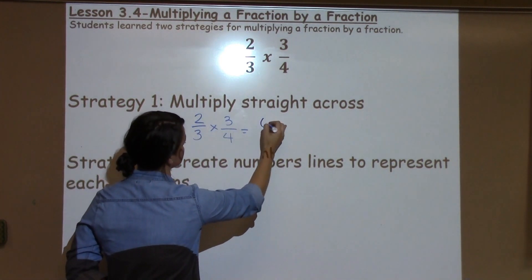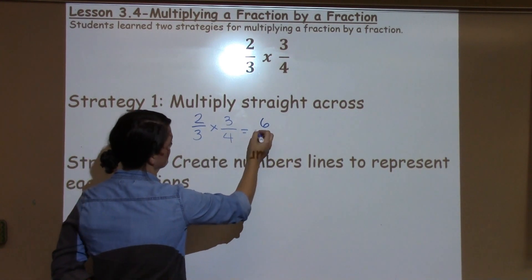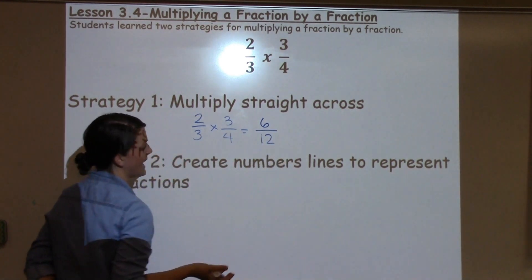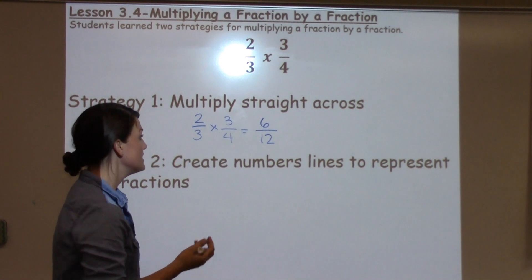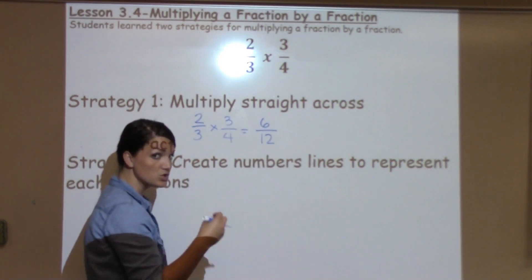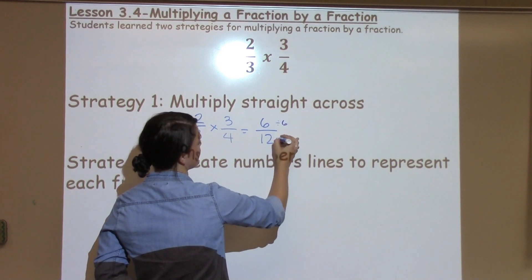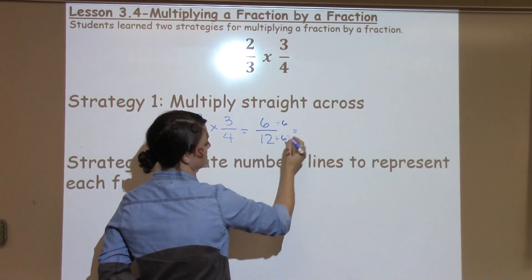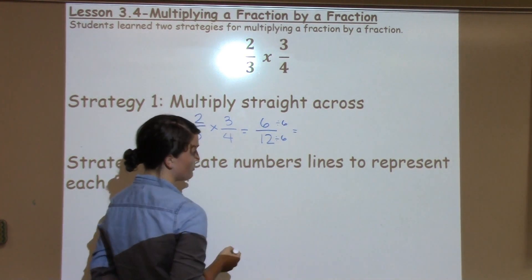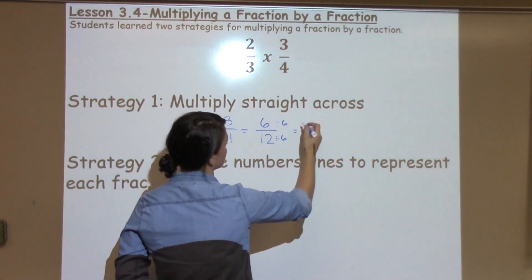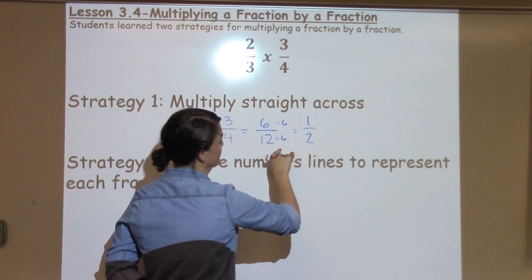So, 2 times 3 is 6. 3 times 4 is 12. And that would be my answer, 6 twelfths. Now, we have been talking about reducing fractions as well. So, students might also see that these could both be divided by 6, divided by 2. These also could both be divided by 3 to make a smaller fraction because this is the same as 1 half.